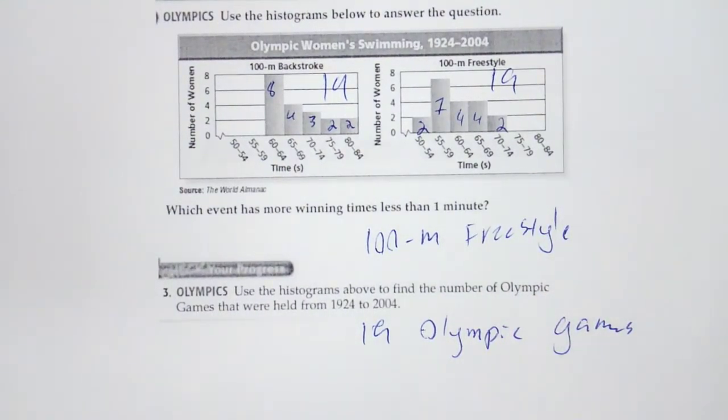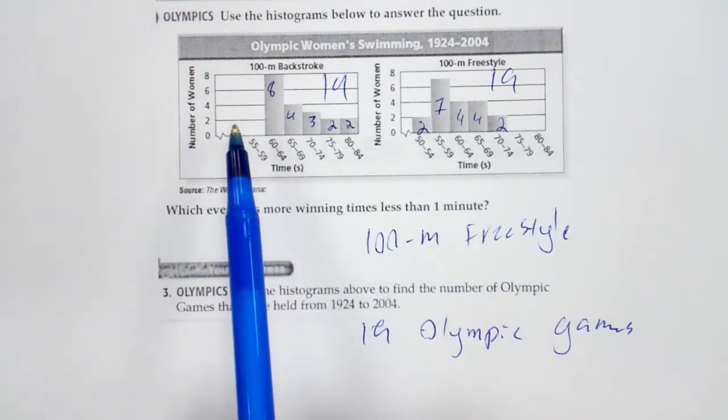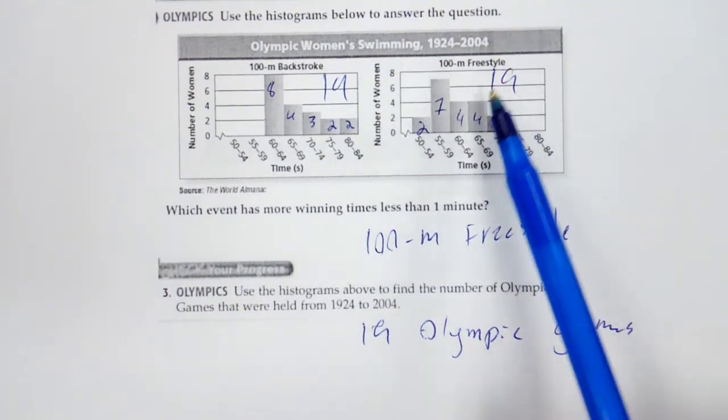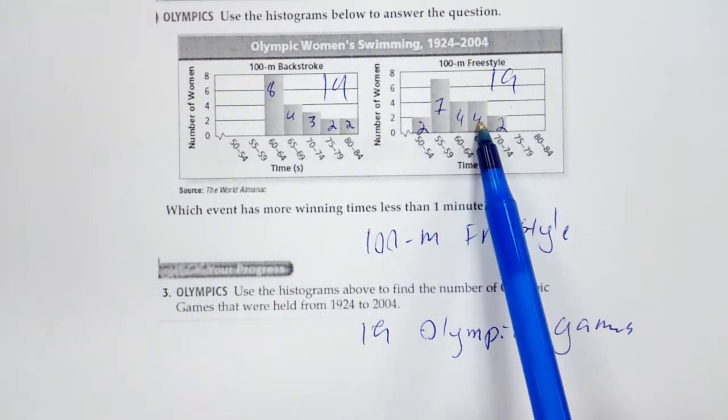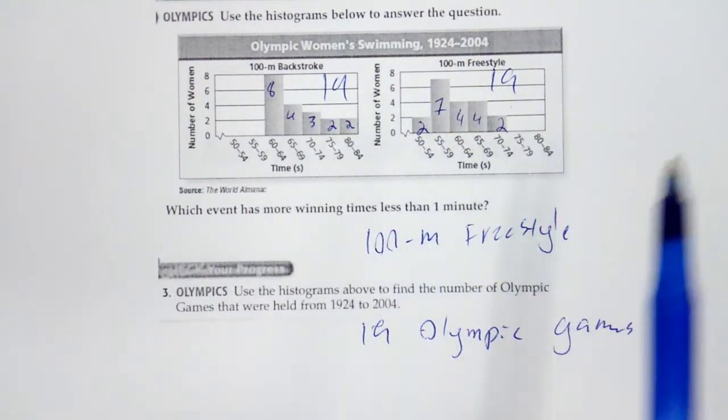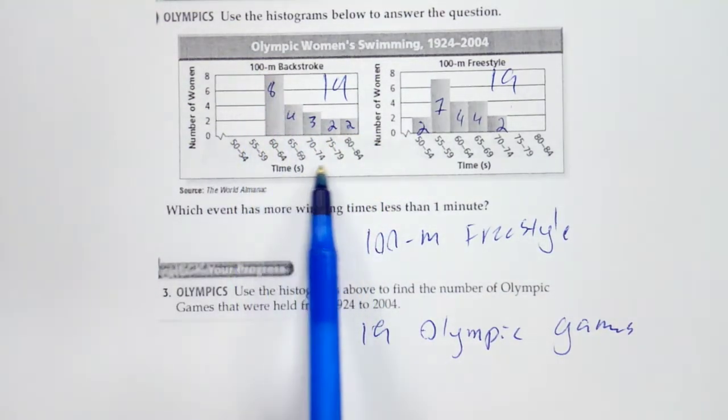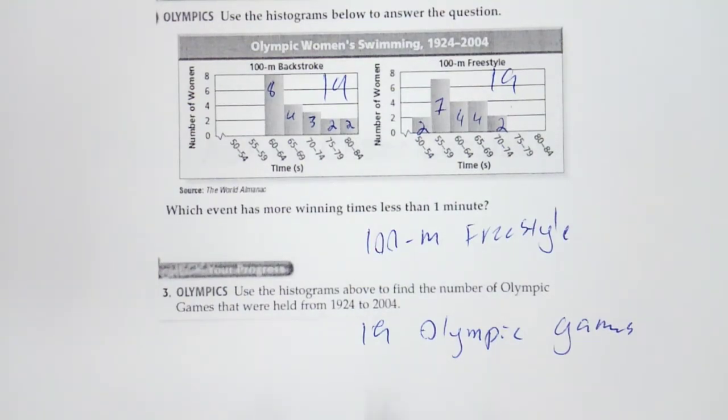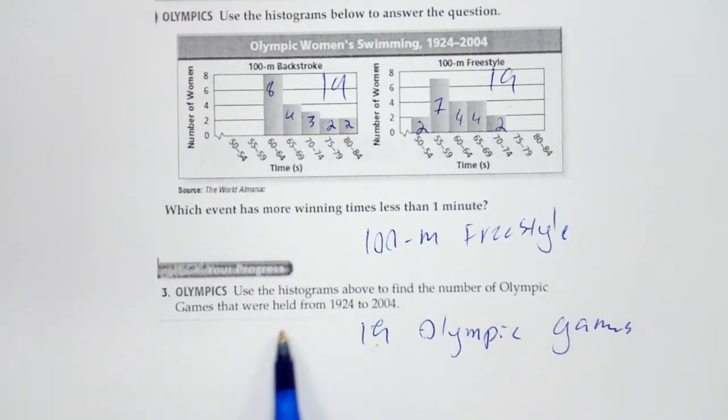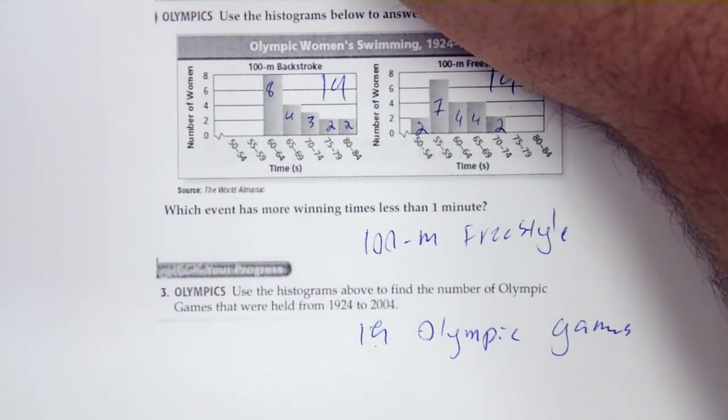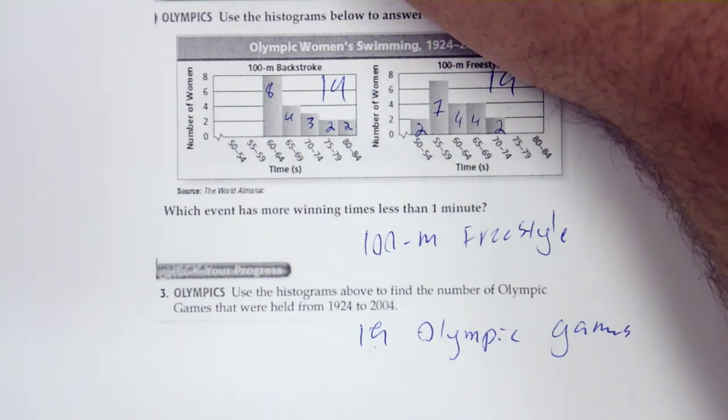Okay, so we can use histograms to answer questions. So we were able to figure out that this is the quicker race. We have more times under a minute. And then we were able to figure out by just counting our totals of the winner's times, and found out there was 19 Olympic games. Do you have any questions about histograms? Just go ahead and ask me or send me an email.